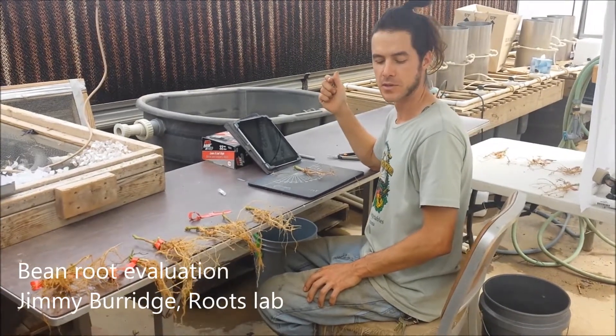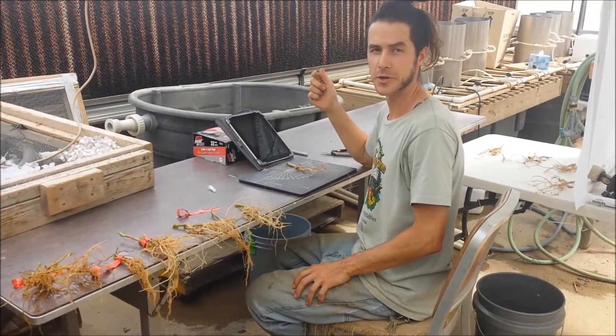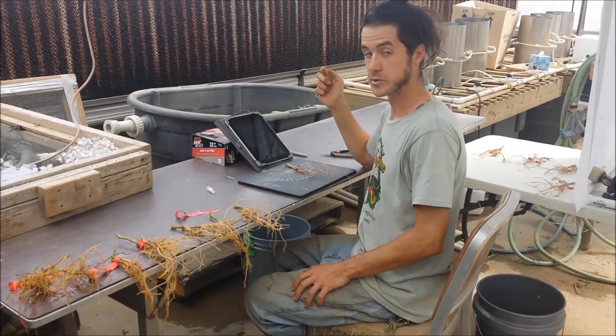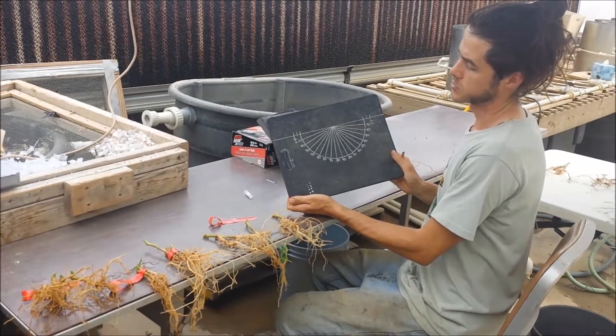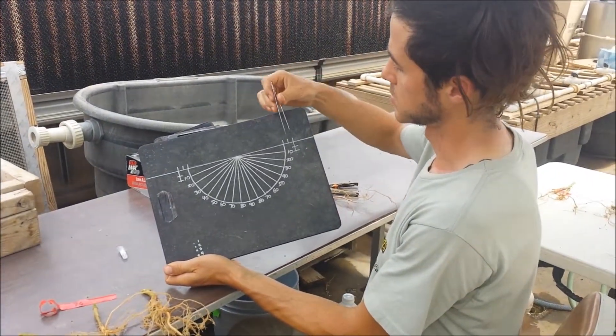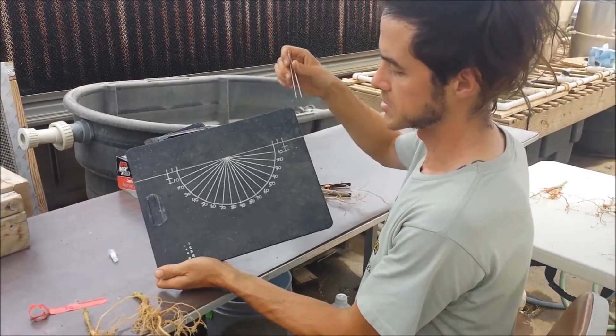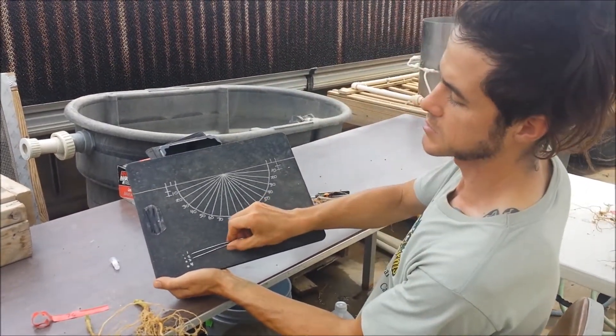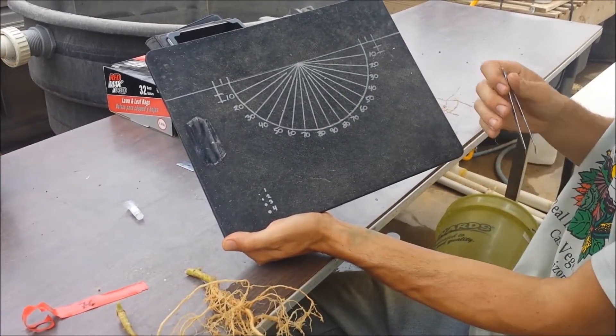Now that we have the roots in the greenhouse, we're going to evaluate them for some root architectural traits. We're going to do this using our shovel-oven scoreboard, which is basically a protractor with some two centimeter segments that helps us count density. There are also some dots reflecting diameter that we can use for nodule size.